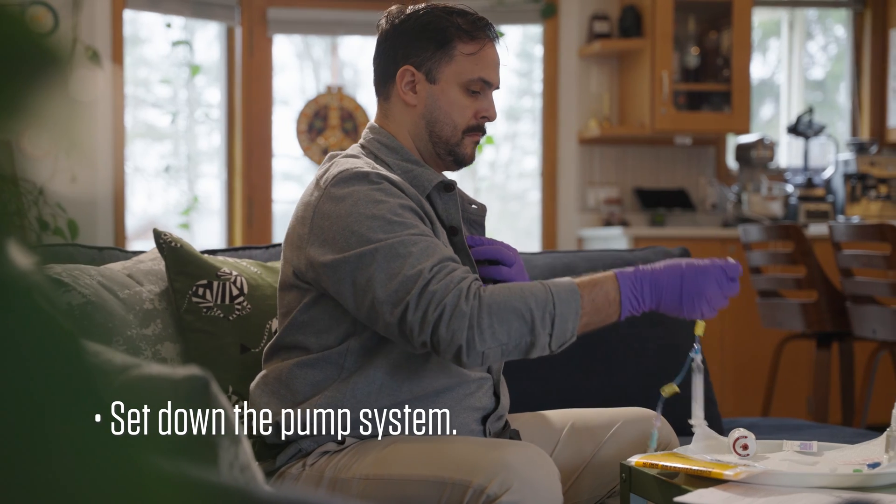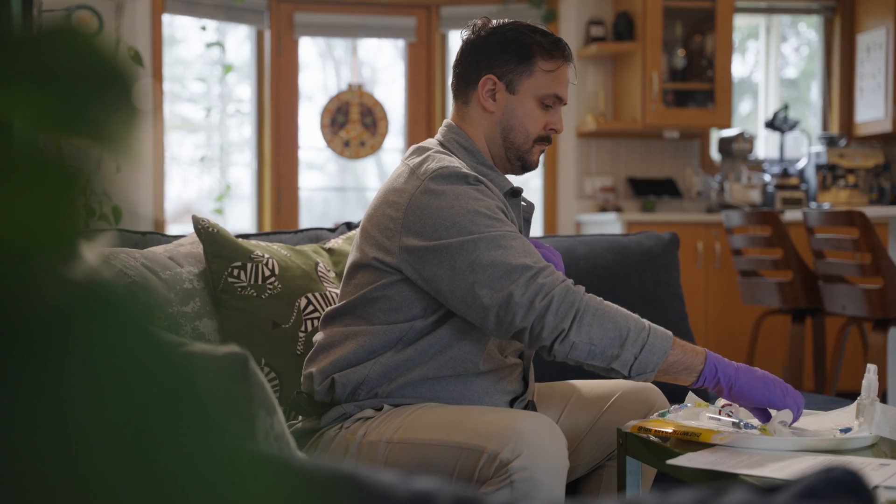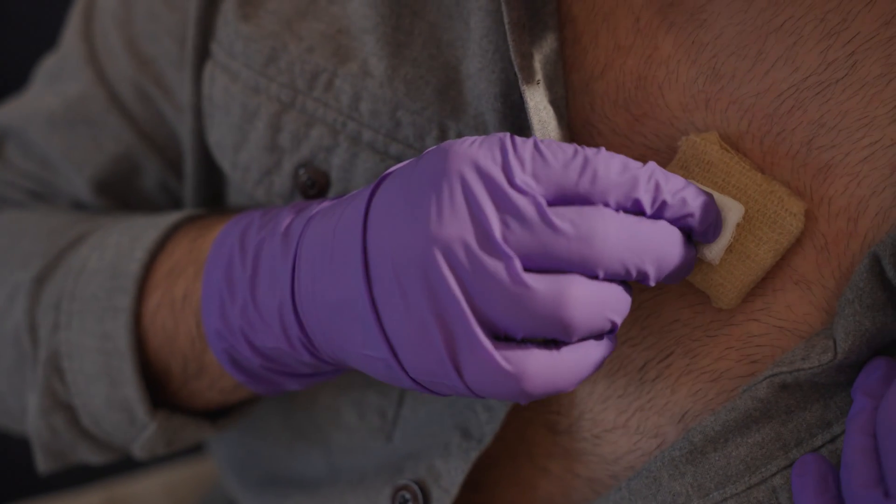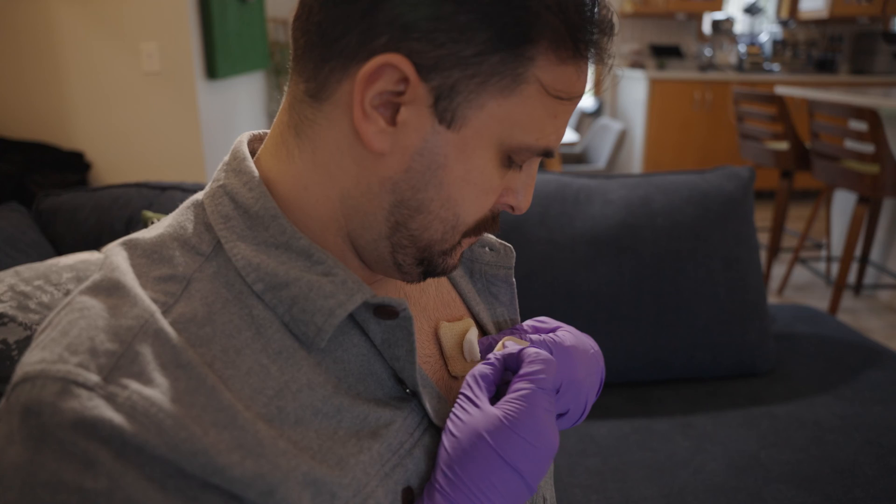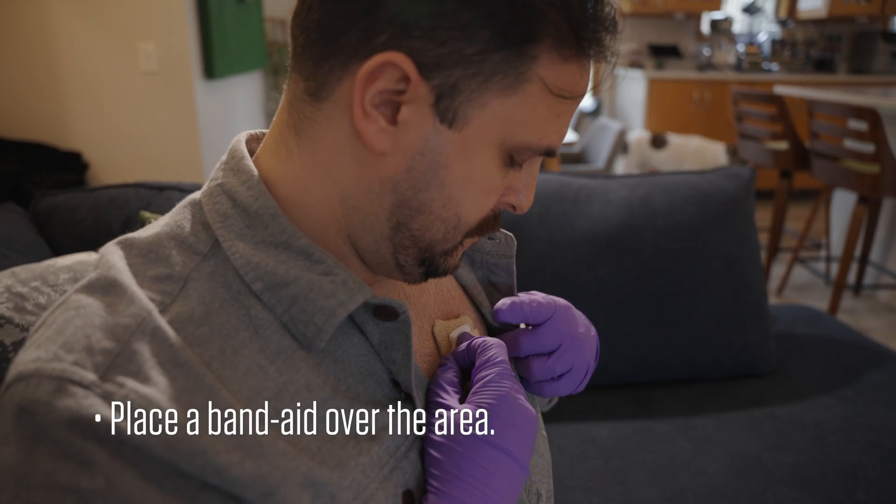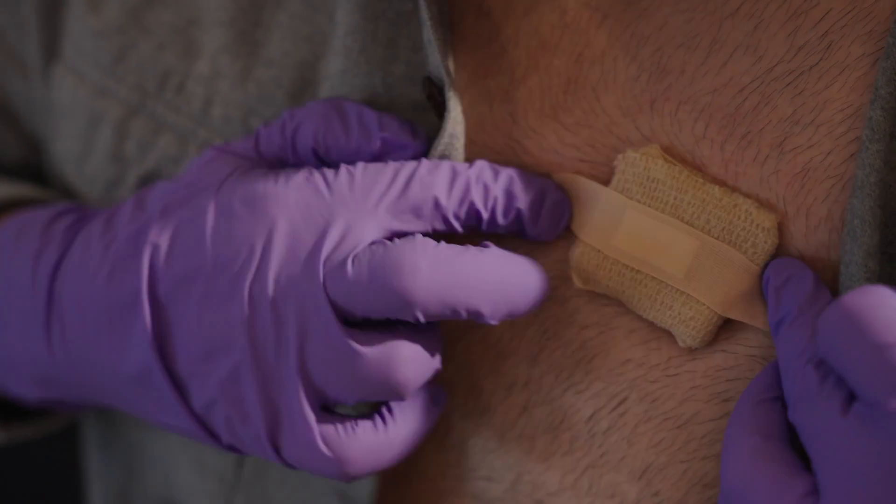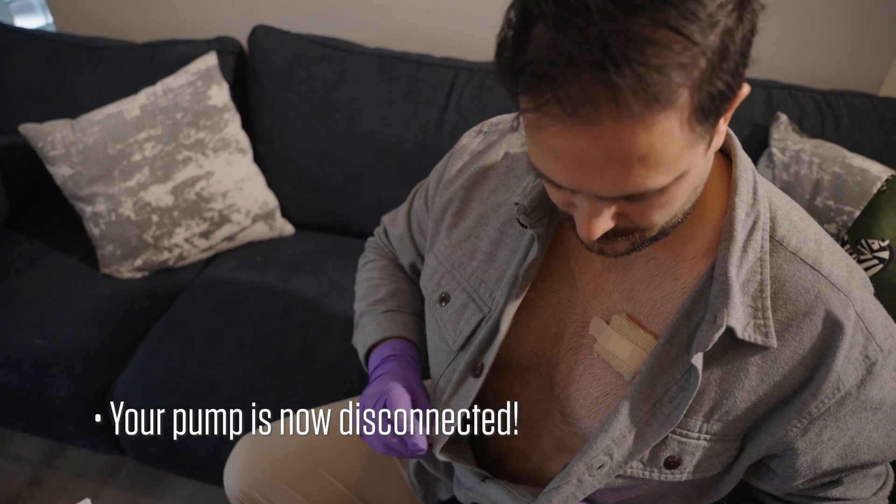Set down the pump system. Press the gauze pad against the needle site. Apply gentle pressure for 3 minutes. Place a band-aid over the area. Your pump is now disconnected.